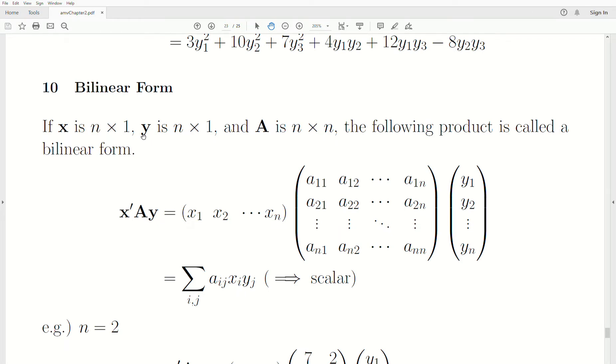So here we have vectors X and Y, n by 1, and A is an n by n matrix. Notice there's not a requirement for it to be symmetric. Then this product is called a bilinear form. And when you do the math, it's a double sum. So it's the same, but we have X and Y instead of Y and Y. And it's a scalar.